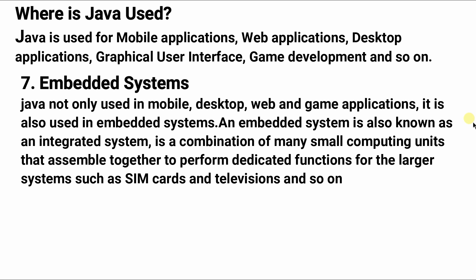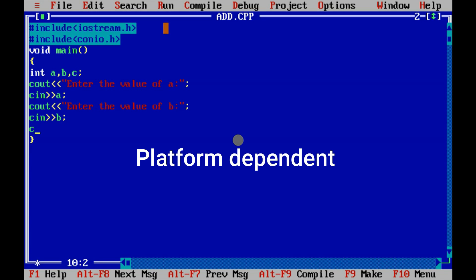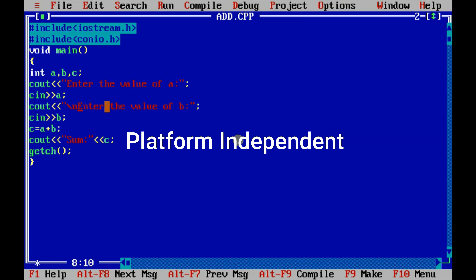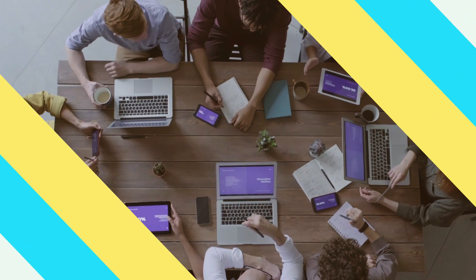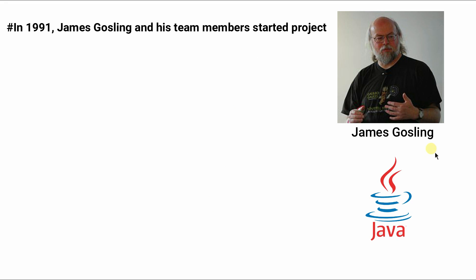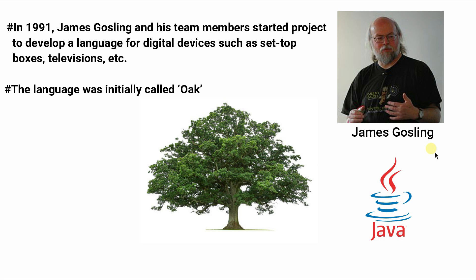Now let's talk about the history of Java. Before the development of Java, C and C++ were the most popular and advanced technologies of the time, but they had one drawback: they were platform-dependent. That's why James Gosling wanted to develop a language that is platform-independent and could be used not only in computers but also in other devices such as smartphones and tablets. In 1991, James Gosling and his team members started a project to develop a language for digital devices such as set-top boxes and televisions. The language was initially called Oak.